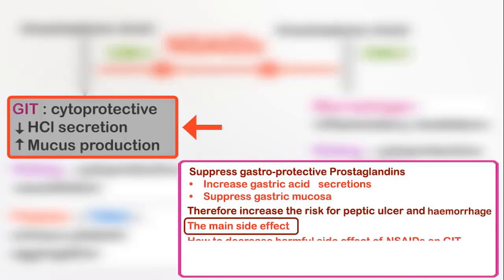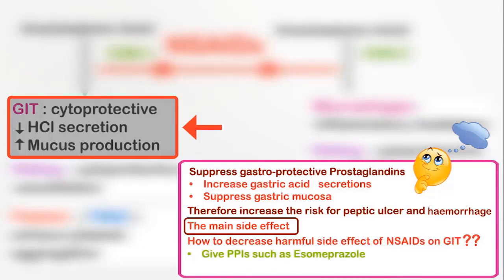The question now is how to attenuate the gastrointestinal side effects of non-selective NSAIDs in patients that have no alternative for this important anti-inflammatory drug group. There are two pharmacological choices to lessen these serious side effects. Firstly, prior administration of one of the cytoprotective proton pump inhibitor drugs. Alternatively, administration of prostaglandin agonists, such as misoprostol, might alleviate the GIT complications.